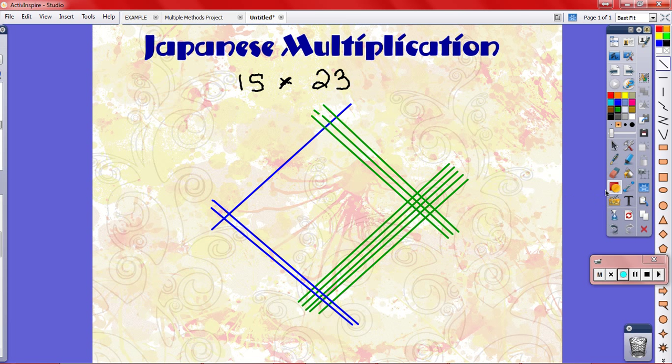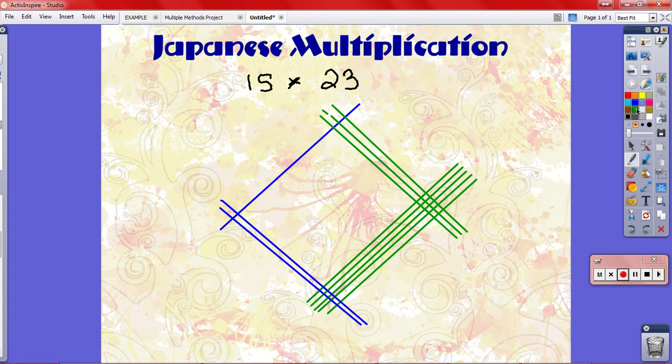Now we kind of circle these areas that we use. The first one is, these are our ones. Okay.